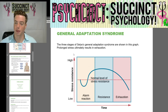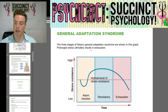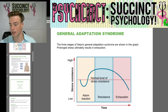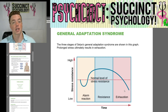The three stages of Selye's general adaptation syndrome are shown in a graph. Prolonged stress ultimately results in exhaustion. You can see the normal level rise during the alarm reaction, maintain higher stress resistance during the resistance phase, and then in the exhaustion stage, stress resistance drops significantly.